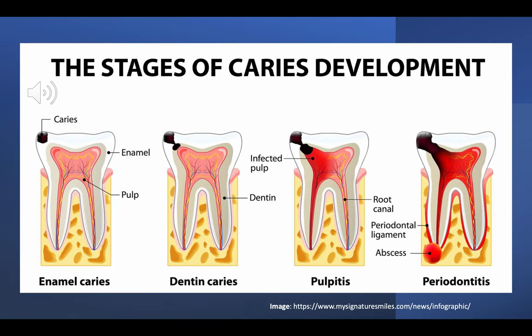Here I included a schematic of the stages of caries development so you can see what I'm talking about when I reference the enamel. As you can see in the first picture, the enamel is the outer hard surface of the tooth, and the caries labeled is the dark spot that eventually chews through and gets to the pulp of the tooth, which is the very center, causing a variety of infections and disease.